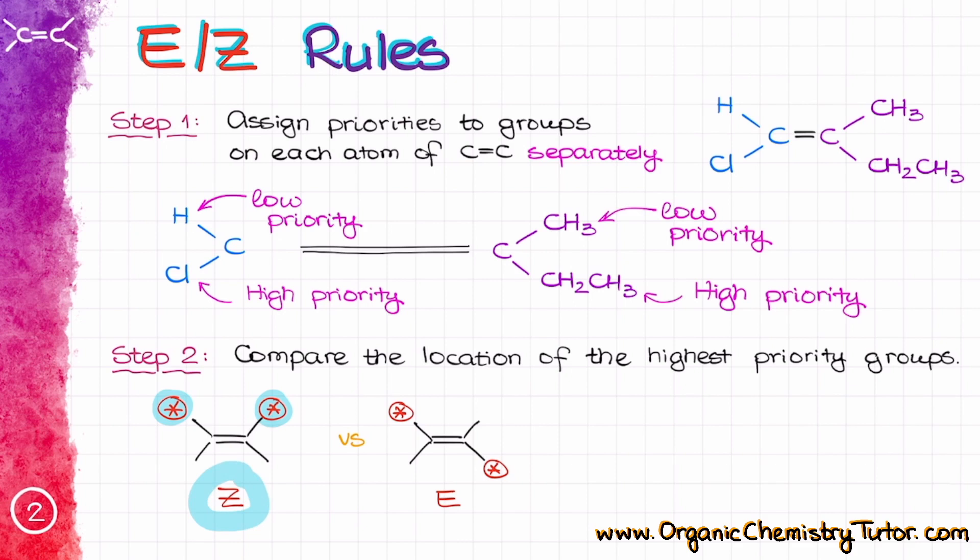In the case of the E isomer, we have the opposite situation, where my highest priority, these two groups, would be on the opposite sides of the molecule. So that would constitute the E isomer. So for our molecule, we have the chlorine and we have the ethyl group, which are the highest priority groups on the corresponding atoms being on the same side of the molecule. So that makes a Z isomer.